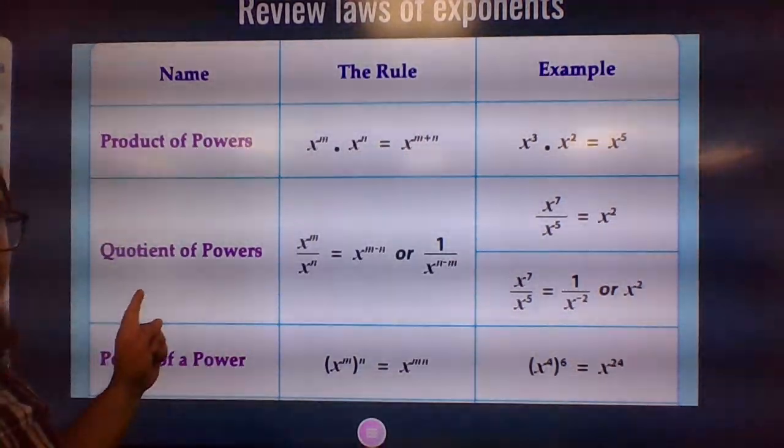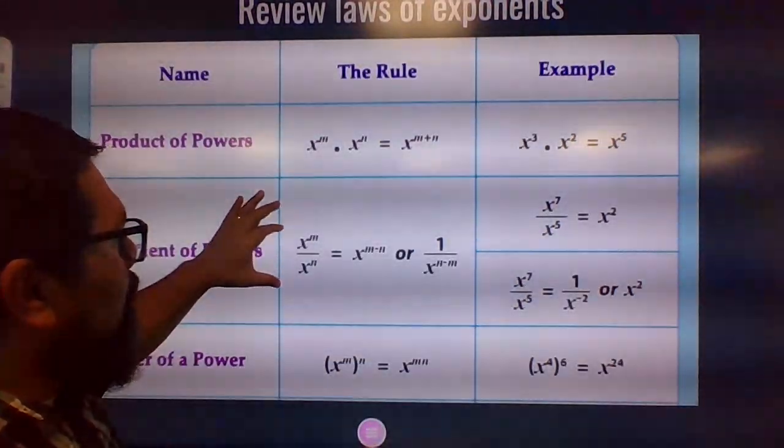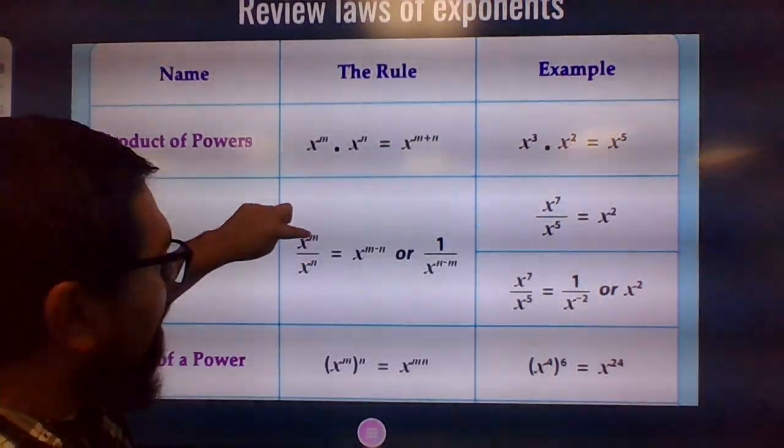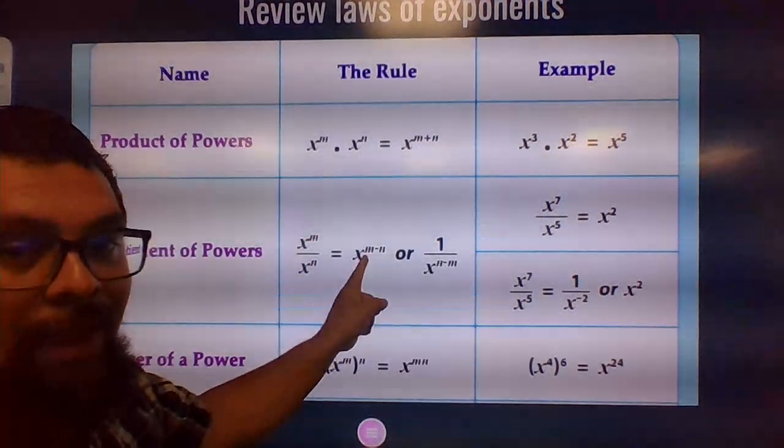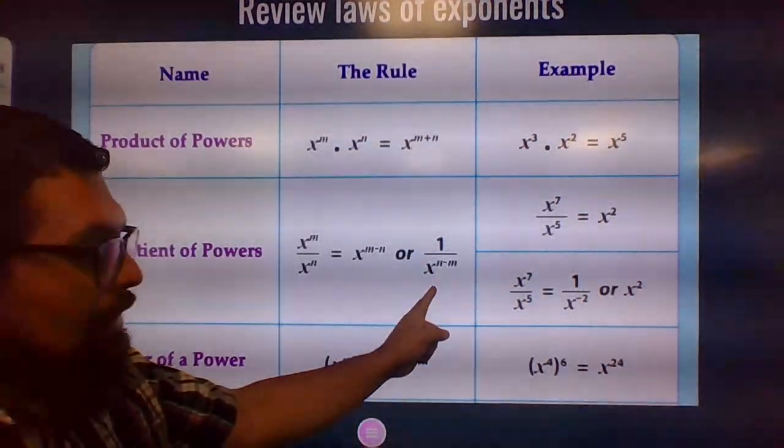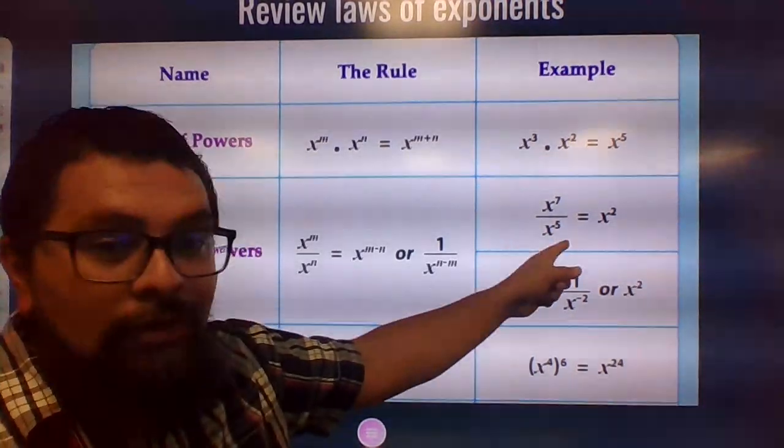Here's the quotient of powers. So anytime you have two powers that have the same base, all you do is subtract the exponents. See how you subtract the exponents? Or you can write them like this. And then here's two examples.